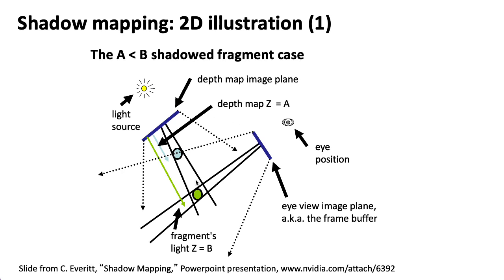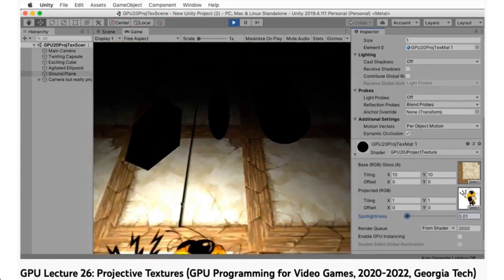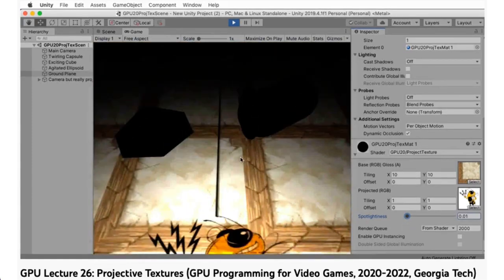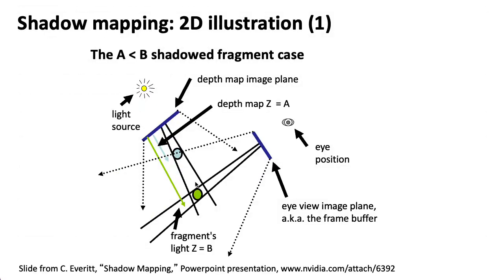When we go to actually render the scene and imagine drawing this green object, we compute the distance from that point to the light. Notice that it's a lot bigger than what we would see in the depth buffer at the appropriate point. This is actually a primary use of projective textures, and the main reason I wanted to discuss them in the previous lecture. We would then realize that the blue object will mask the light source going to the green object, and we declare it to be in shadow.